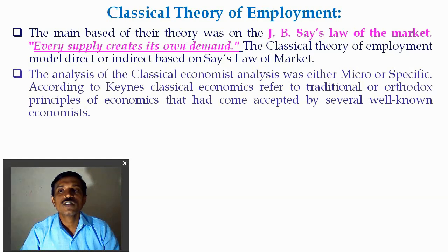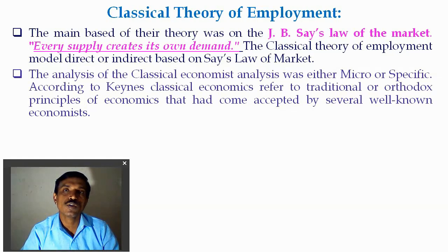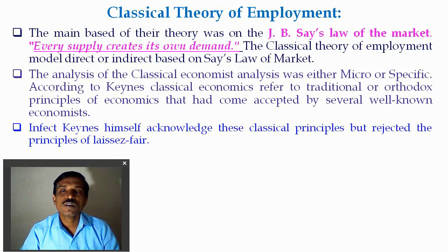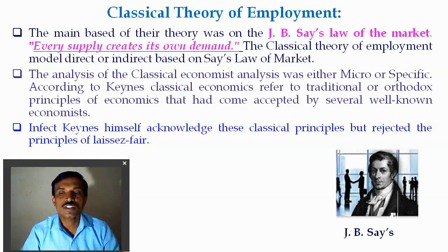The analysis of classical economics was either micro or specific only. According to Keynes, classical economics referred to the traditional or orthodox principles of economics that had come to be accepted by several well-known economists. In fact, Keynes also acknowledged some principles of classical economics but rejected the principle of laissez-faire — no intervention — while Keynes believed there is a need for intervention. J.B. Say gave an important contribution with his law.